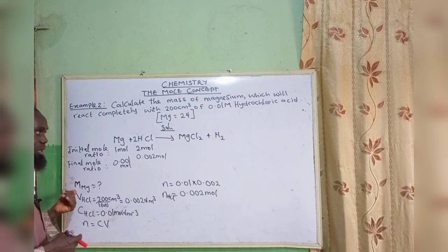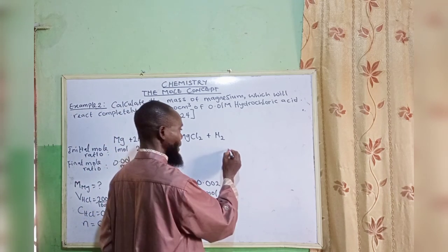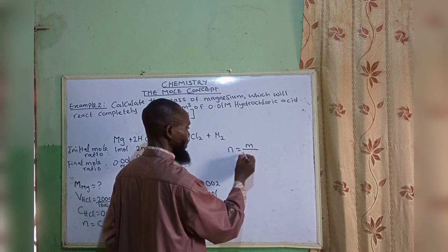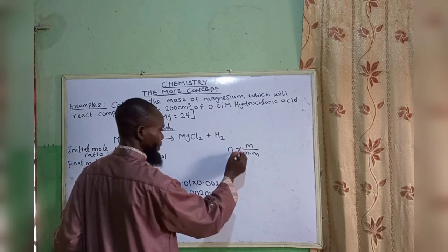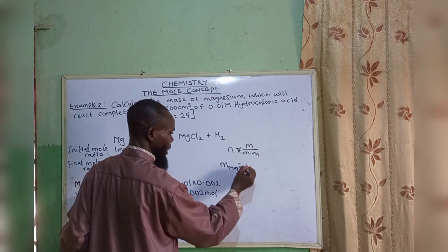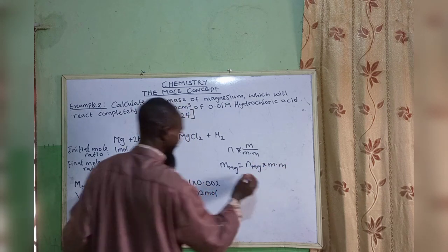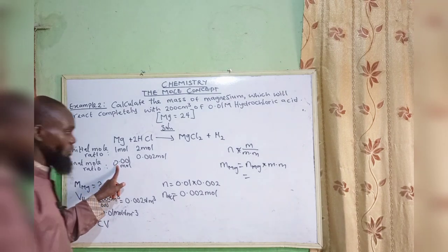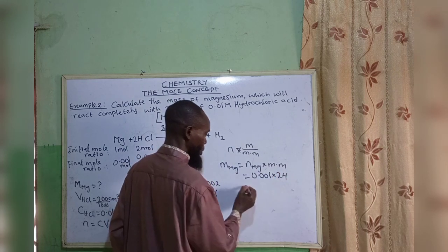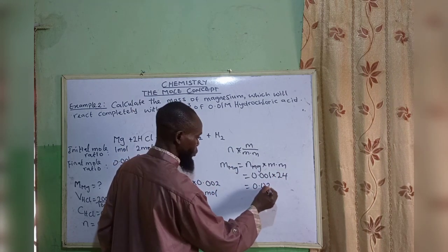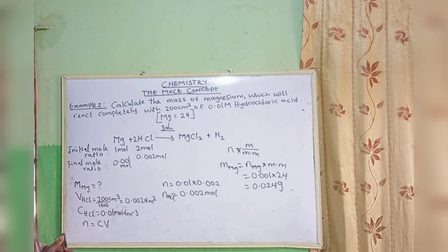We are asked to find the mass of magnesium. The atomic mass of magnesium is 24 grams per mole. From the formula: number of moles equals mass over molar mass, so mass of magnesium equals amount of magnesium multiplied by molar mass: 0.001 times 24 equals 0.024 grams. The unit of mass is grams.